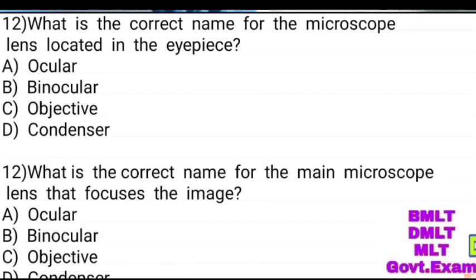What is the correct name for the microscopic lens located in the eyepiece? Options: ocular, binocular, objective, condenser. Answer: ocular.